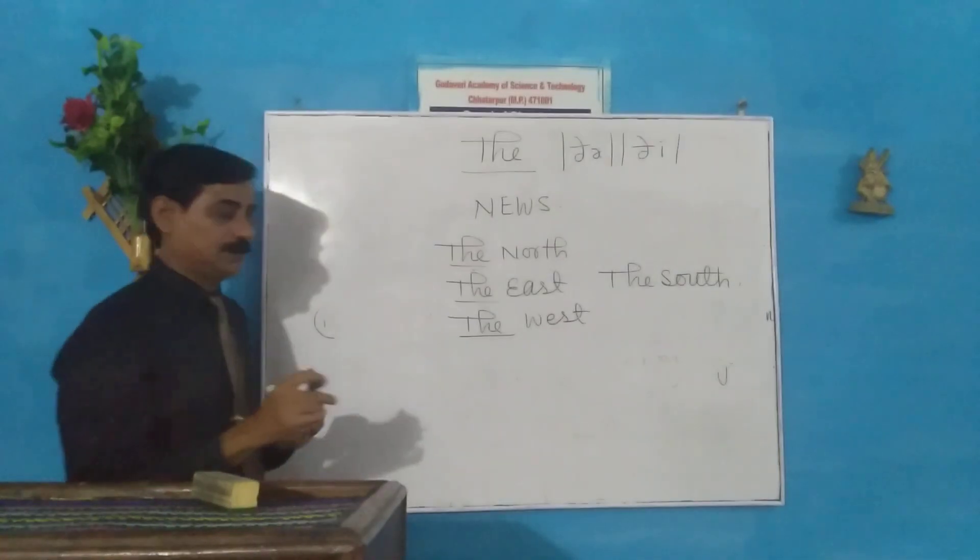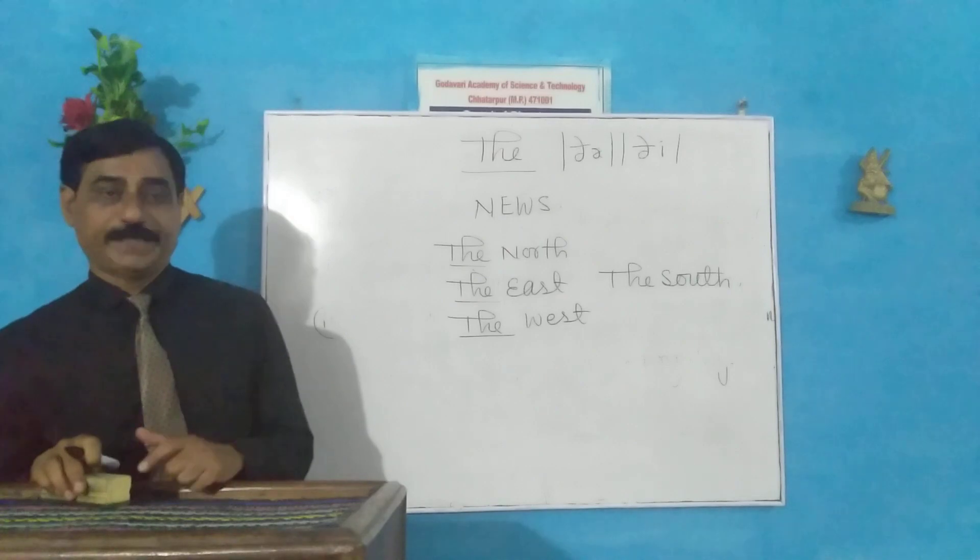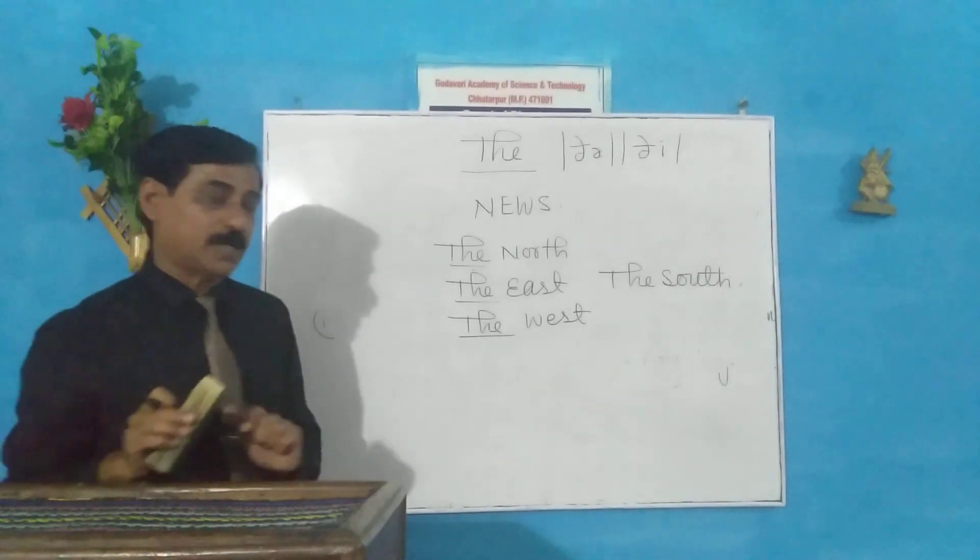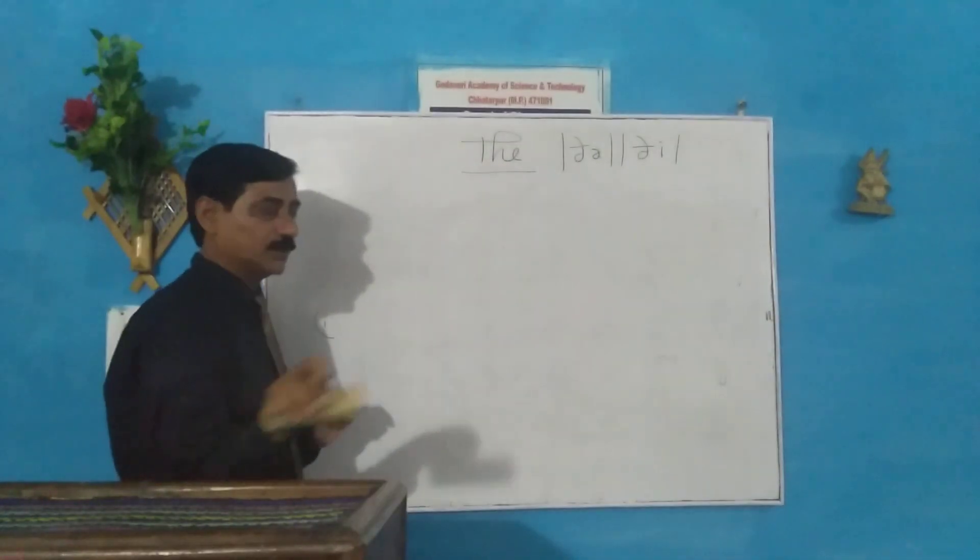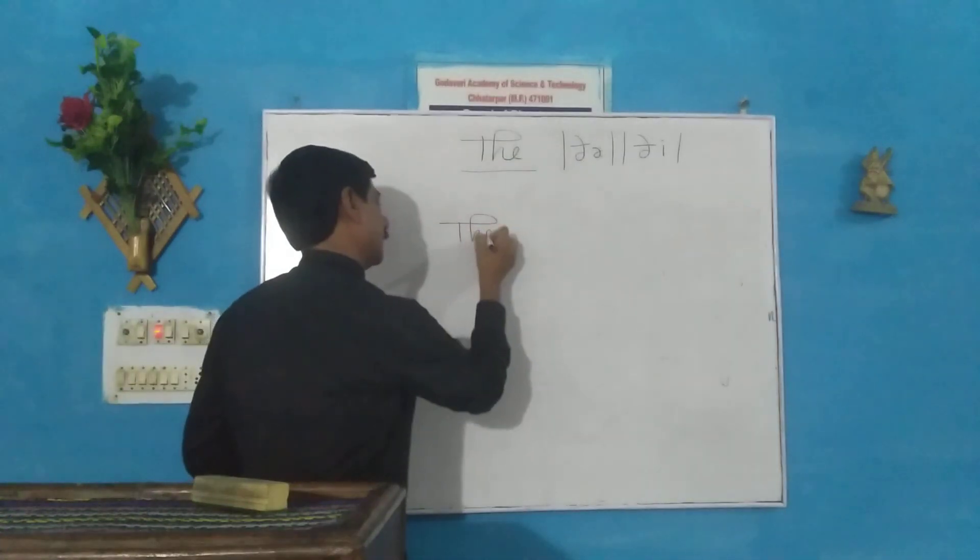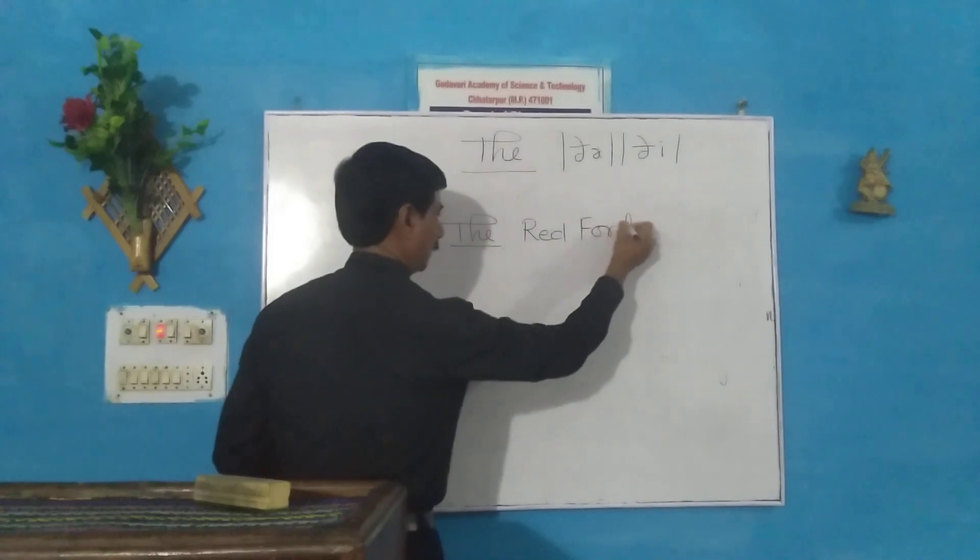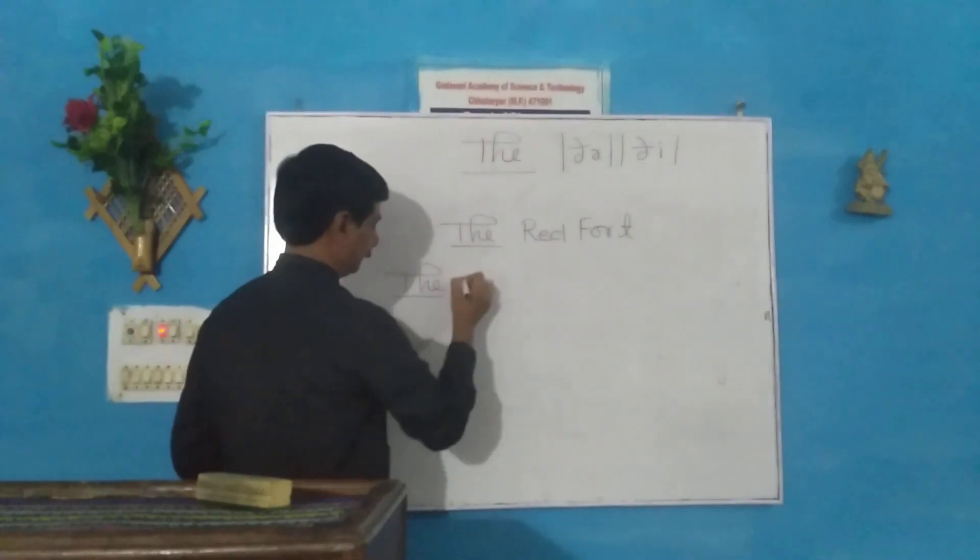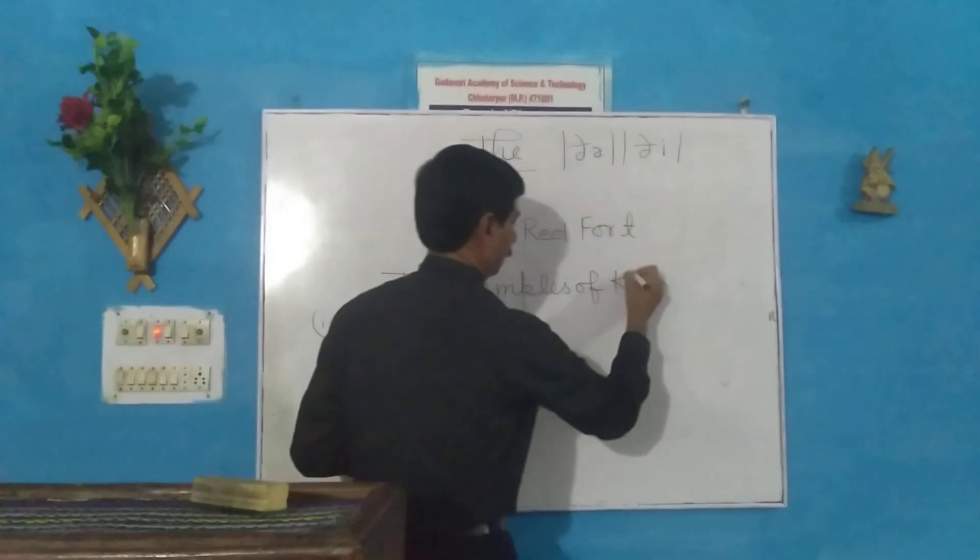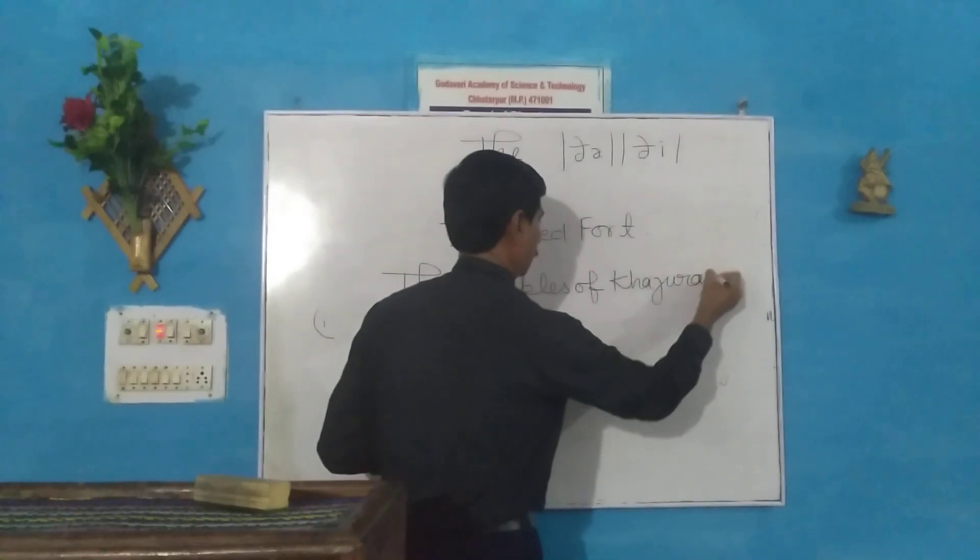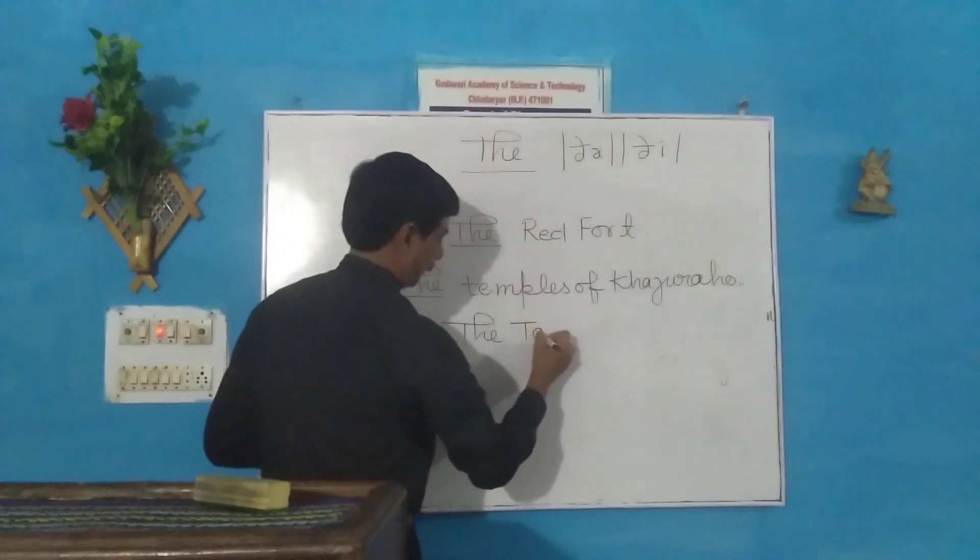Next rule: The is used before historical buildings or monuments. Before the names of historical buildings or monuments, we use definite article the. The Red Fort. The Temples of Khajuraho. The Taj Mahal.